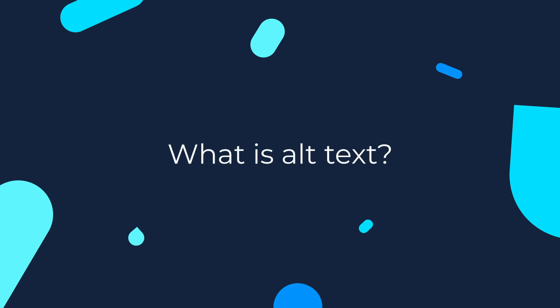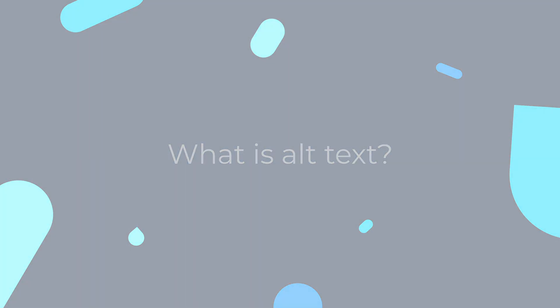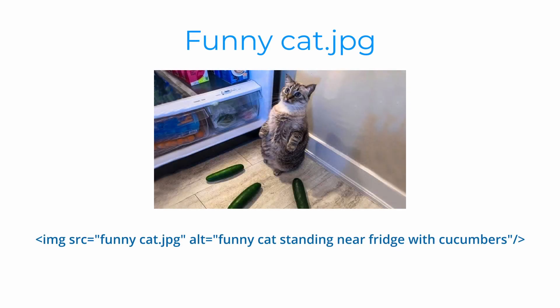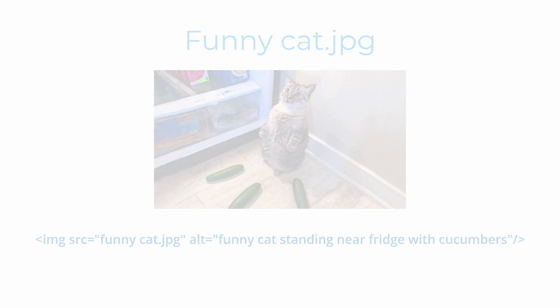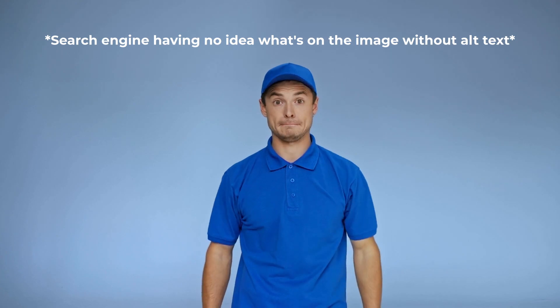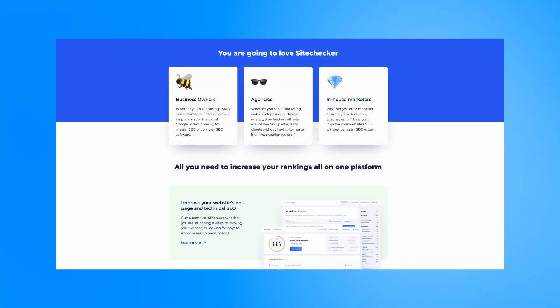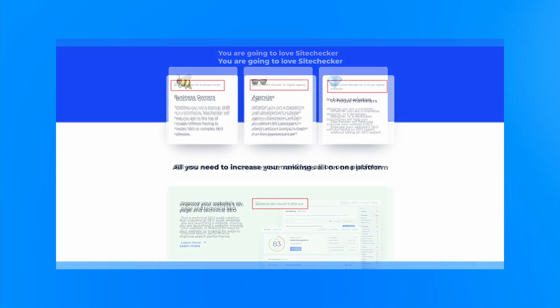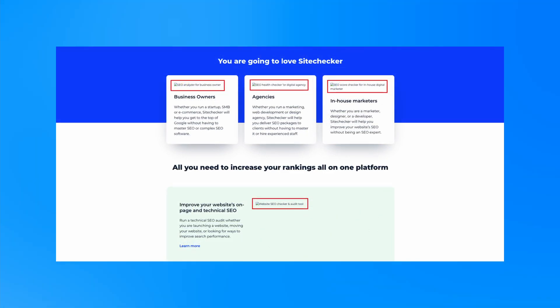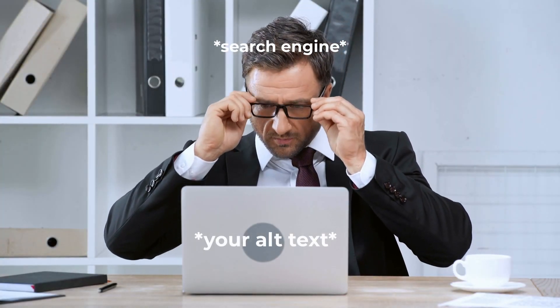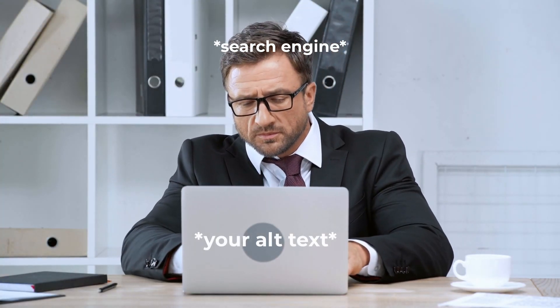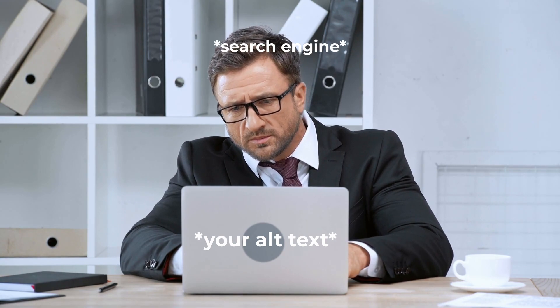First up, what is alt text? Alt text is a piece of detailed information on what is in the image. Alt text is crucial in helping your images to be recognized by search engines when they analyze your content in response to a search. Here is an example of how you see an image on the page and how a search engine sees it. Since a search engine does not have real eyes like we do, it fully depends on alt text to know what's on the image.